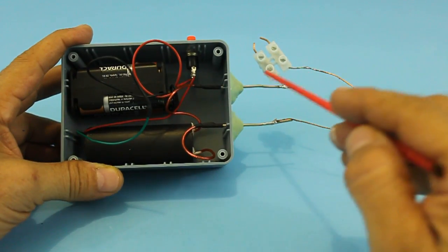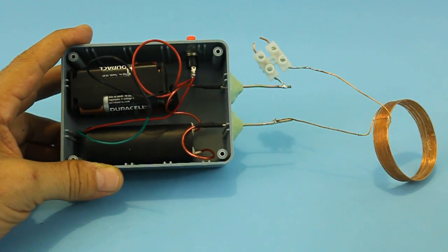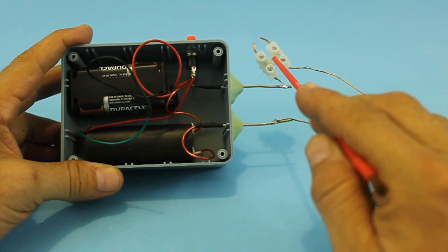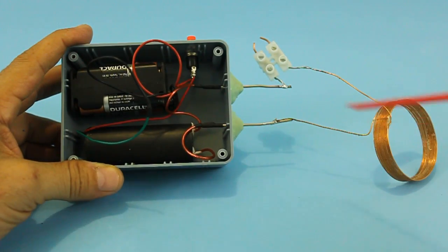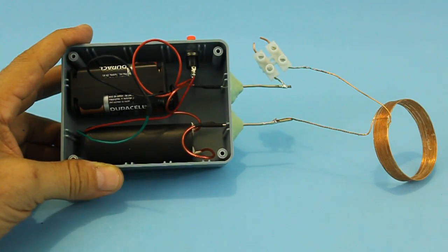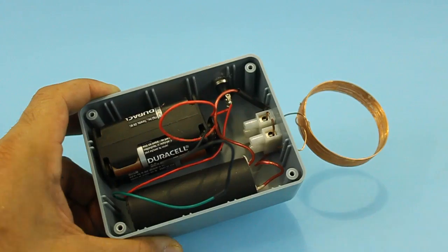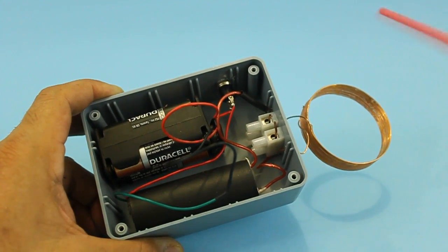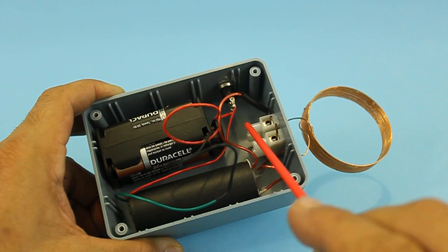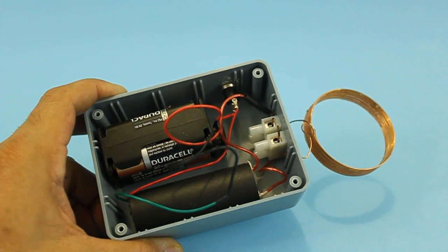Now I am going to take off these terminals which are no longer needed and put the spark gap inside, so that only the coil is on the outside. Now the spark gap is hidden inside the box. Let me show you the connection diagram.